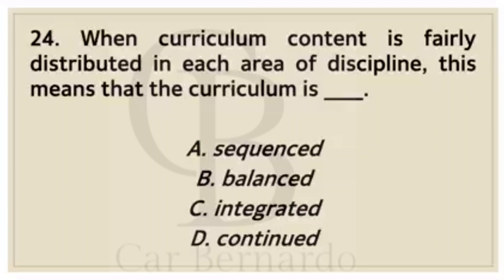Number twenty-four: When curriculum content is fairly distributed in each area of discipline, this means that the curriculum is blank. Letter A: Sequence. Letter B: Balance. Letter C: Integrated. Letter D: Continued. Answer: Letter B, Balance.